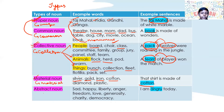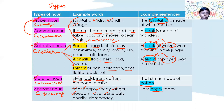Abstract noun. It tells us about feelings, emotions, etc. Examples: sad, happy, liberty, anger, freedom, love, generosity, etc. Example sentence: 'I am angry today.' Here angry is the abstract noun.